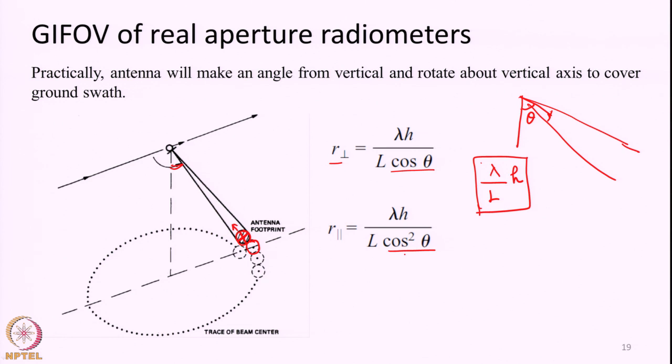Even the SMOS satellite, which is a synthetic aperture radiometer that does not rotate, still has a spatial resolution that is much coarser, again on the order of 30-plus kilometers per footprint. As frequency increases, moving from L-band to C-band or X-band, the spatial resolution will improve somewhat because of the lambda by L term — as frequency increases, lambda decreases, leading to a finer footprint. However, as wavelength decreases toward X-band or C-band, atmospheric attenuation may become high and the satellite may not provide the all-weather capability we normally require from a passive microwave system.